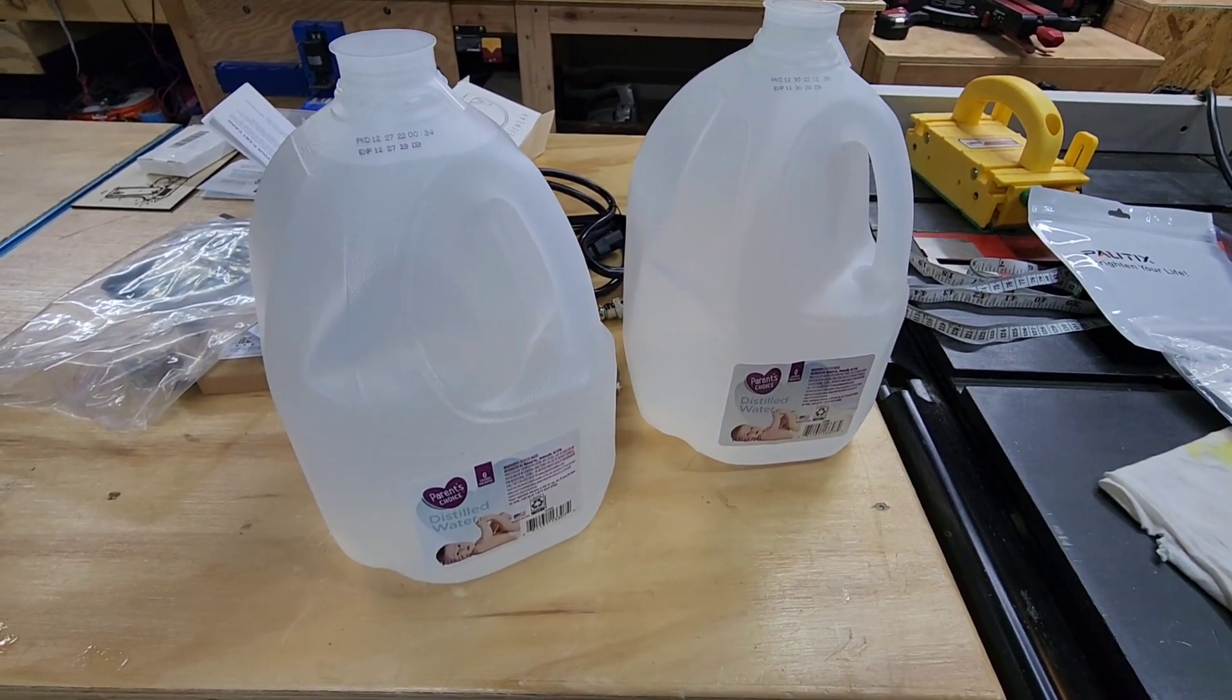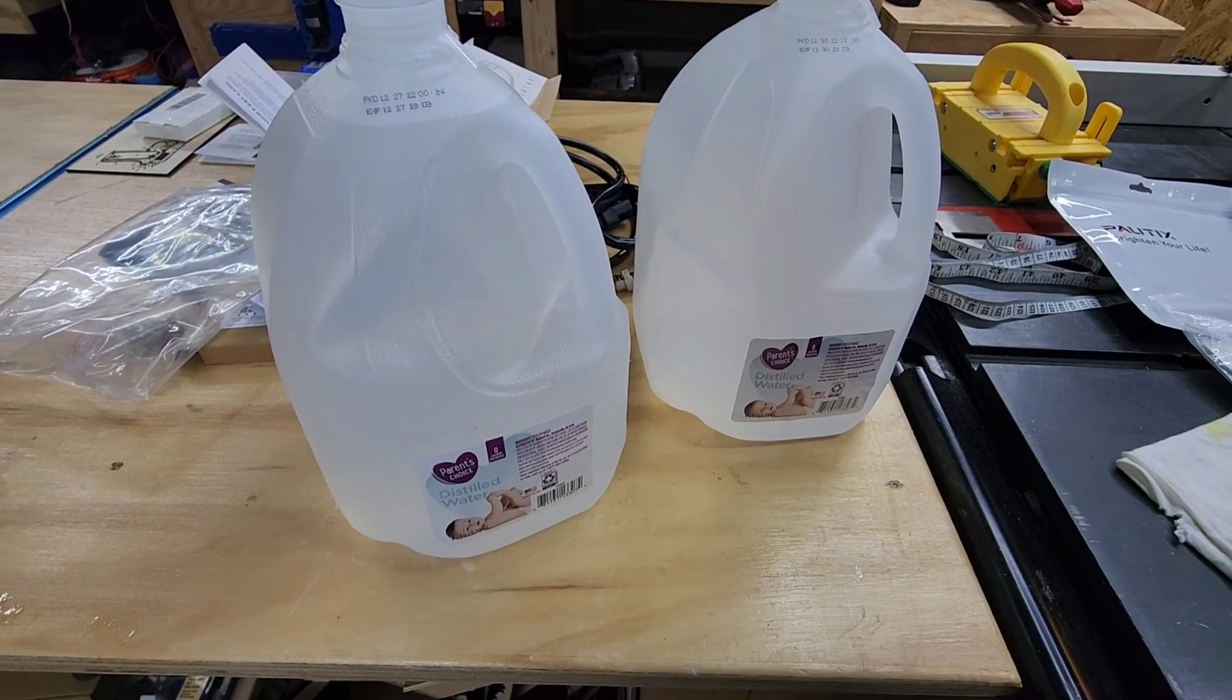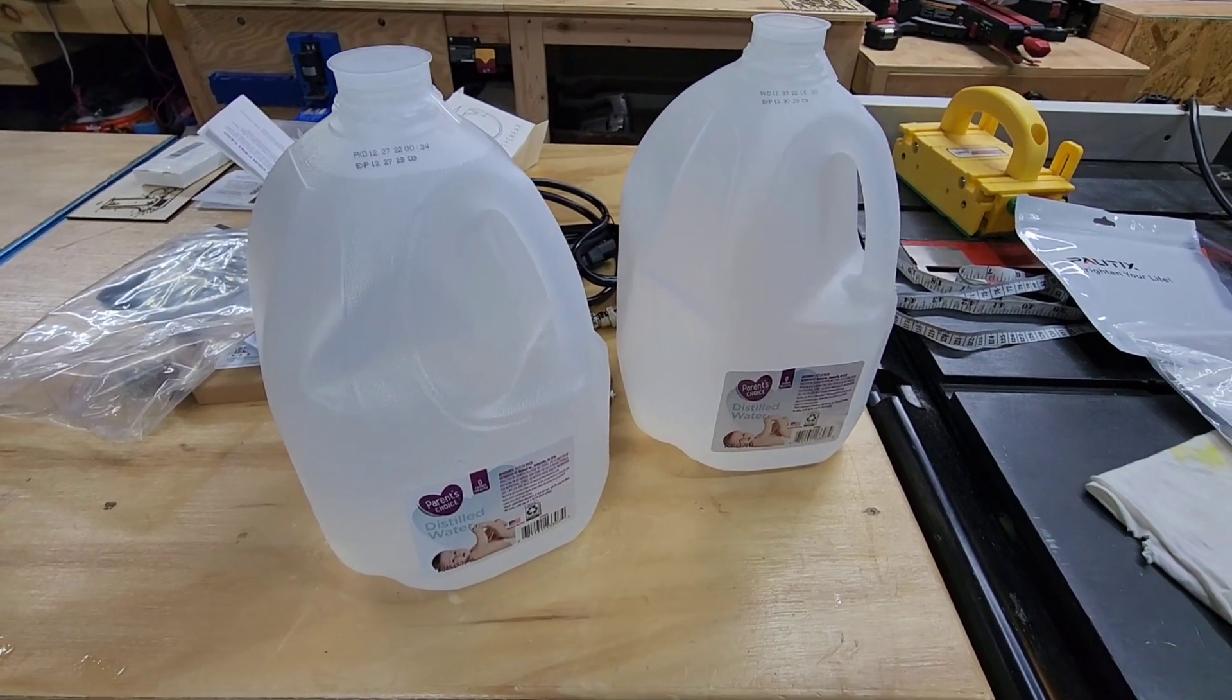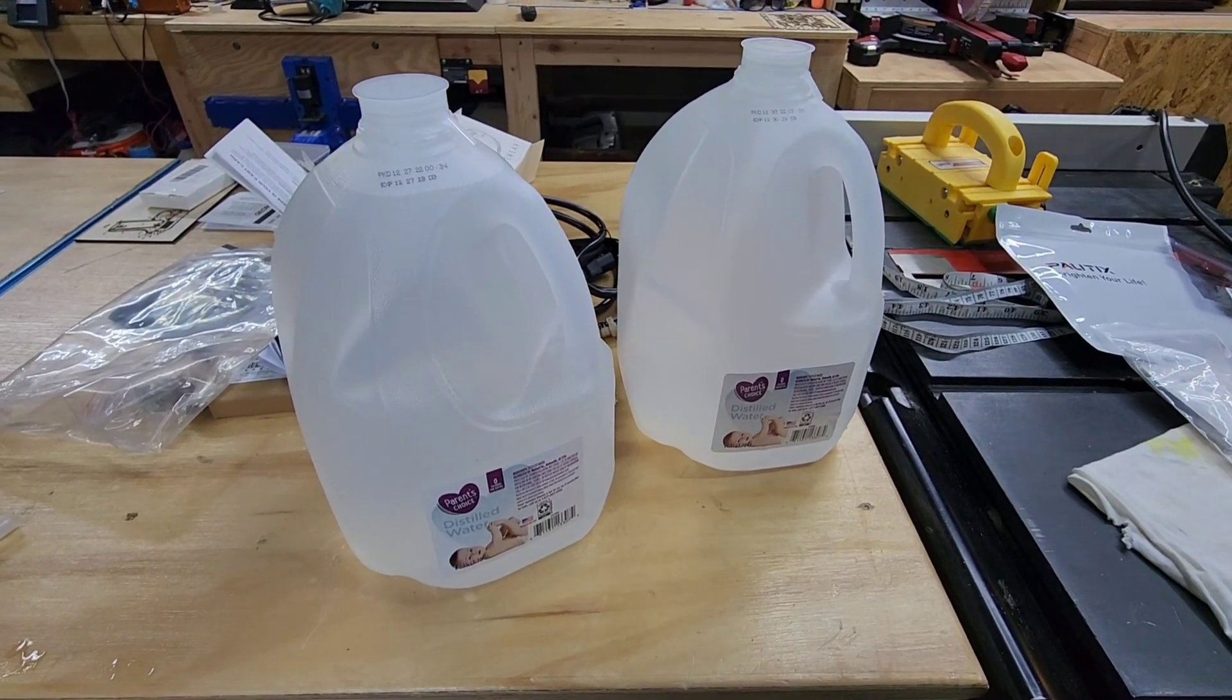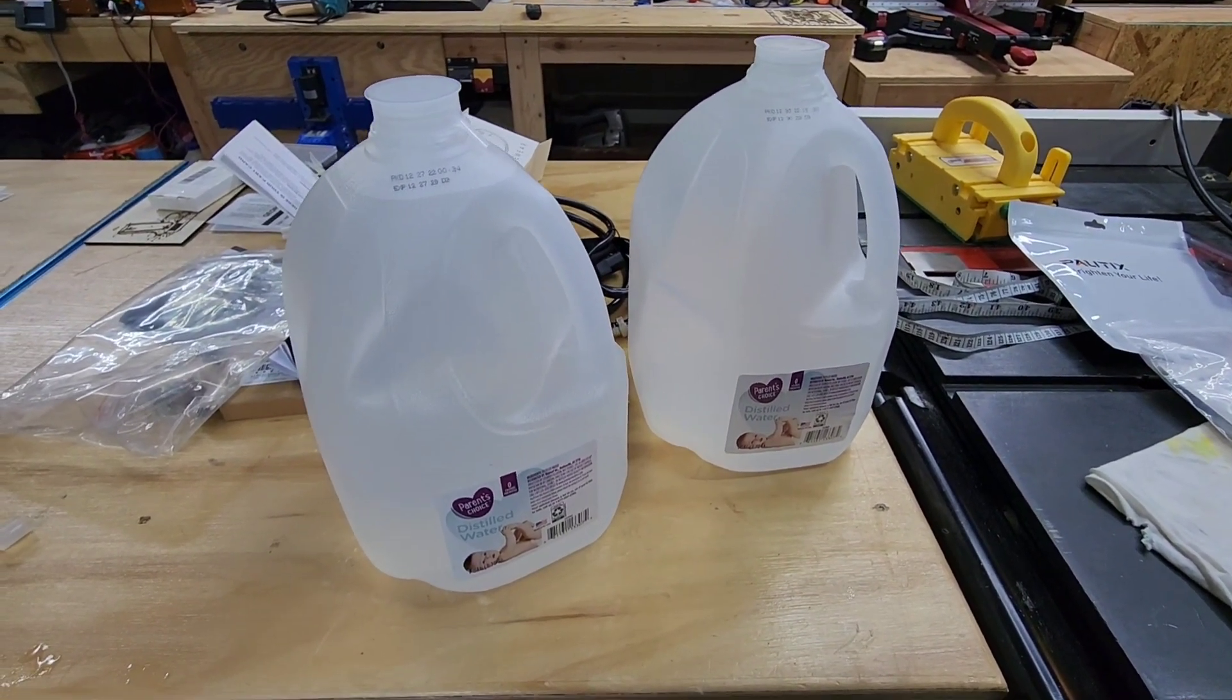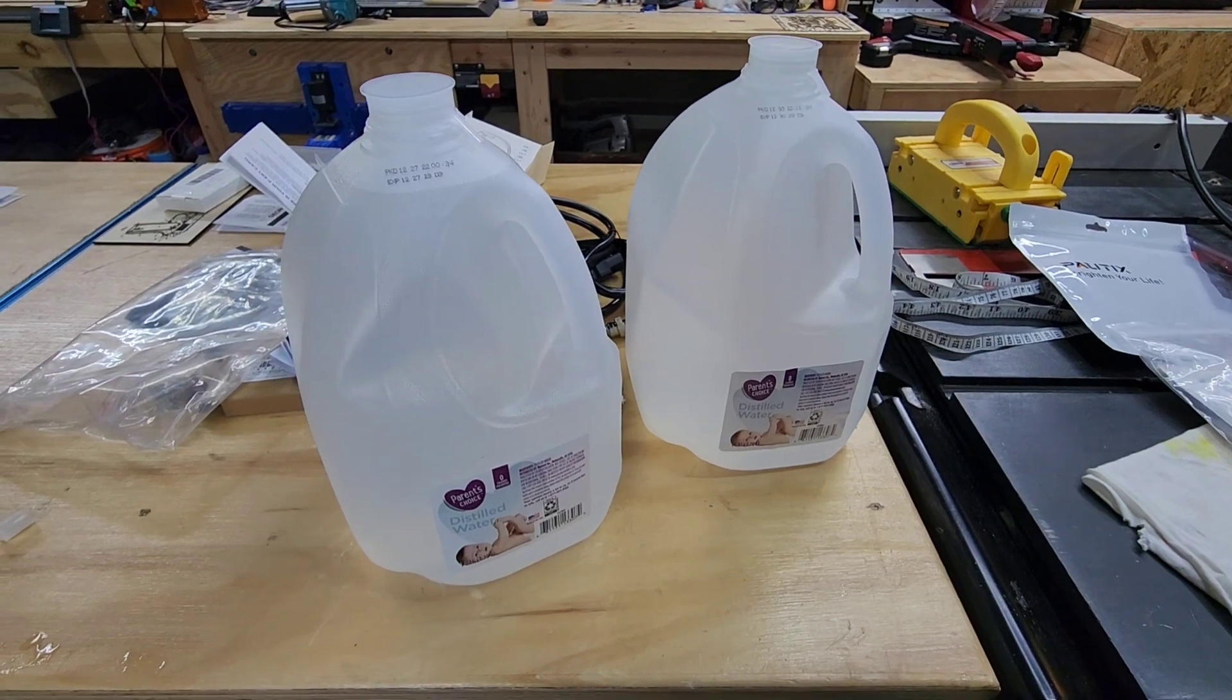The Dawn dish detergent is supposed to help keep the bubbles down inside your laser tube. You don't want any bubbles up in there. They say the Dawn dish detergent is going to lubricate the inside of that glass tube and it should keep the bubbles down, so we shall see.